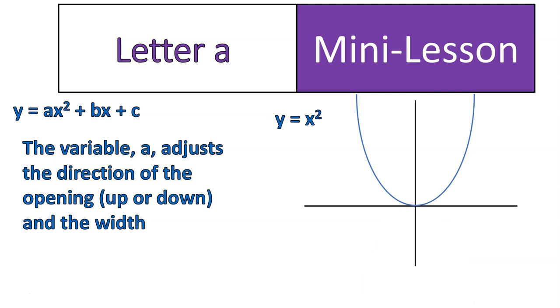All right. If it's a positive number, it's opening upwards. If it's a negative number, it's opening down. And that has to do with your a value. This is like the equation y equals 1x squared. And this is like the equation y equals negative 1x squared.